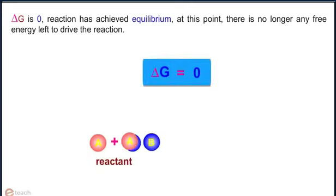If delta G is zero, the reaction has achieved equilibrium. At this point, there is no longer any free energy left to drive the reaction.